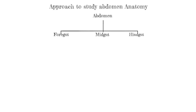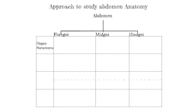First things first, you start with the foregut and discuss the organs that are found. Once you've discussed the organs, the next thing you want to look at will be the blood supply for that respective gut. The third thing you want to look at will be the innervation of that respective gut — we're talking about autonomic innervation, so there's going to be a parasympathetic and sympathetic aspect for each gut. The last aspect you want to be aware of will pertain to the lymphatic drainage of each of the respective guts.